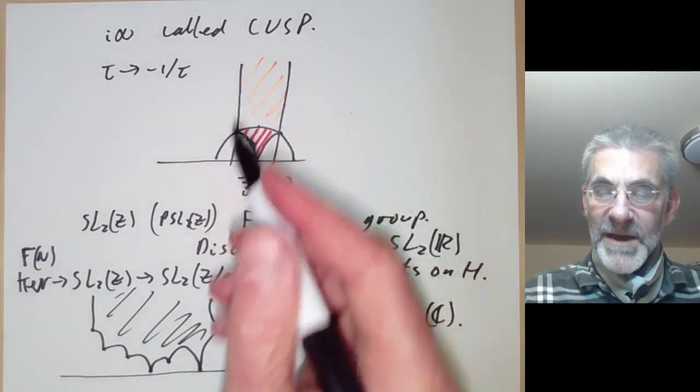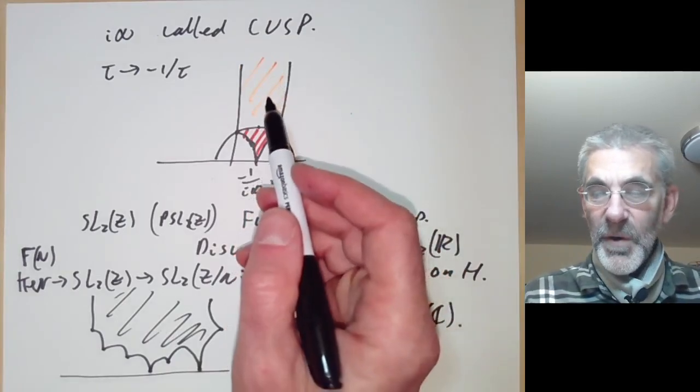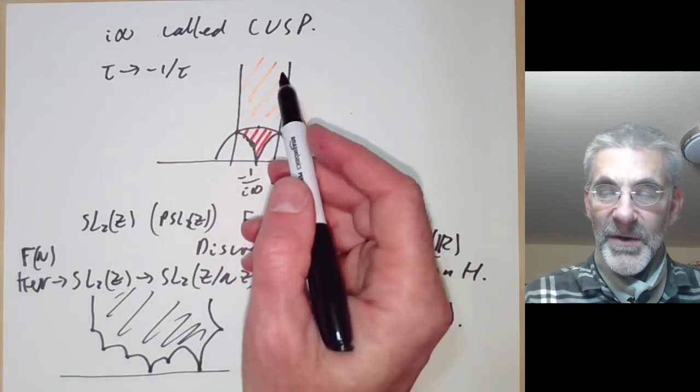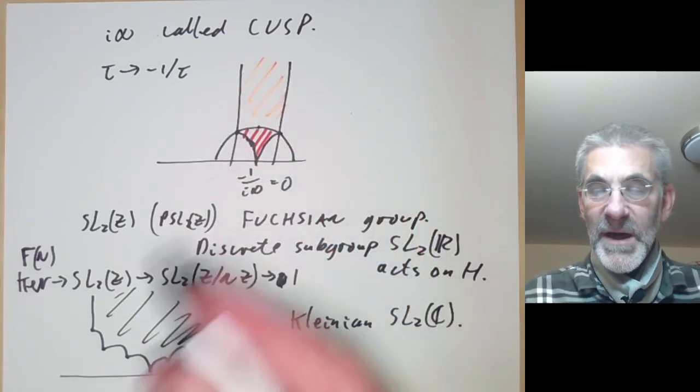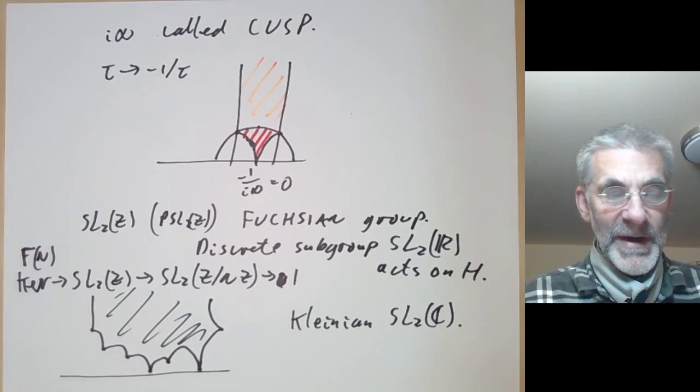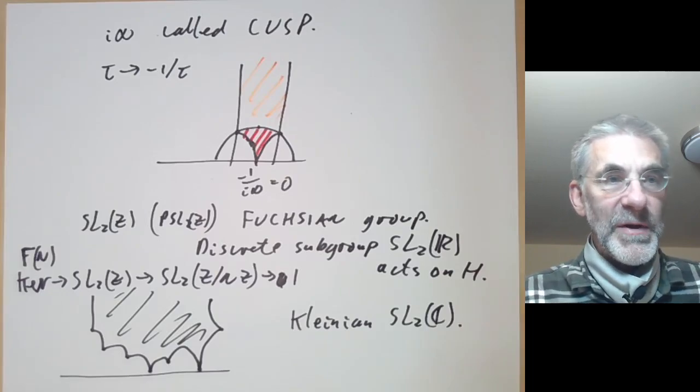So what we're going to do next lecture is to prove a fundamental theorem about modular forms which says that the number of zeros of a modular form in the fundamental region is equal to the weight over 12, as long as you count the zeros in the right way. And then we will use that to classify modular forms.